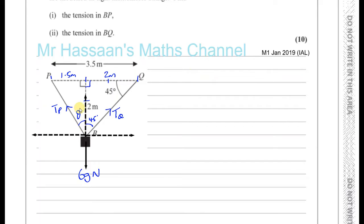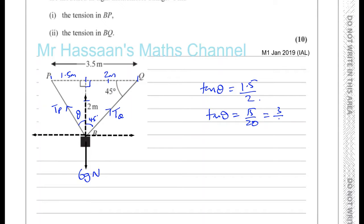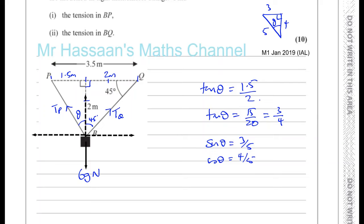Using opposite over adjacent: tan θ = 1.5 over 2, which is 15 over 20, which simplifies to 3 over 4. So tan θ = 3/4. Using the 3-4-5 triangle, sin θ = 3/5 and cos θ = 4/5. I'll use these ratios rather than the angle itself, as it makes the calculations easier.